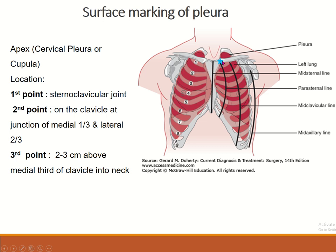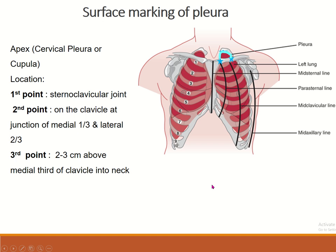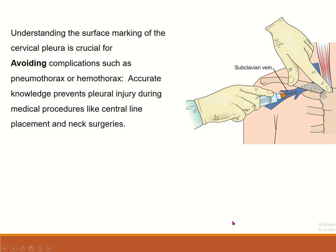The surface marking of the cervical pleura: first point at the sternoclavicular joint, second point at the junction of the medial one-third and lateral two-thirds of the clavicle, third point two to three centimeters above the medial third of the clavicle into the neck. Join this line by a curved line.